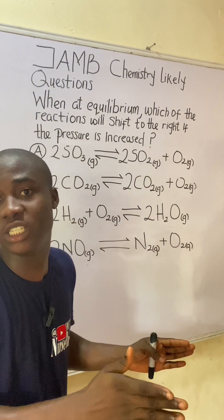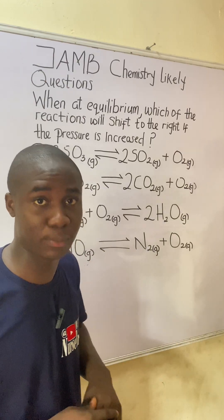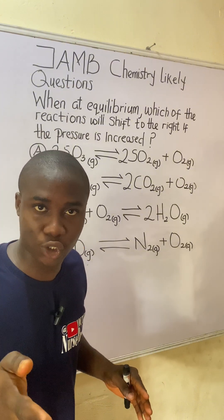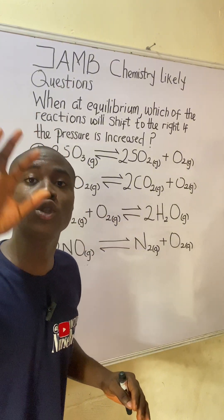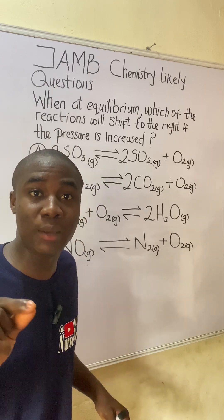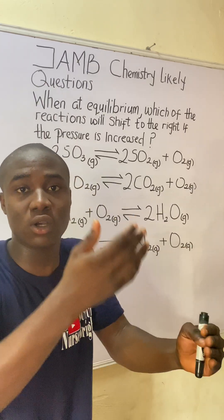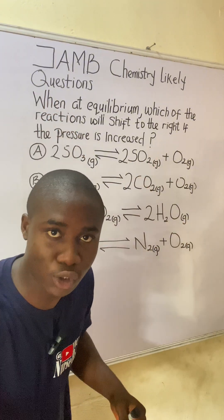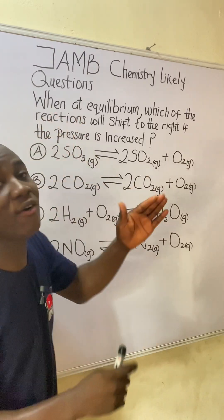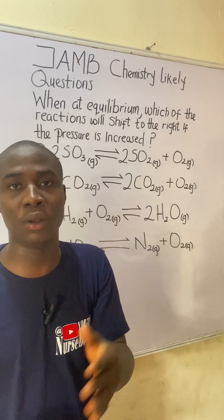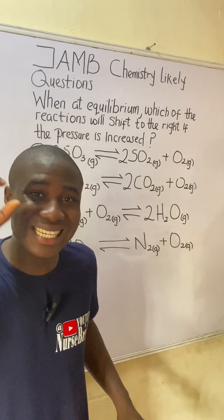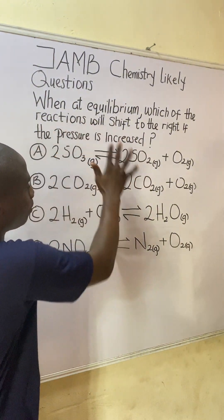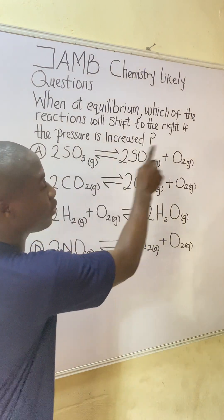So first of all we have to know what Le Chatelier's Principle states. Le Chatelier's Principle states that if an external constraint is imposed on a system at equilibrium, that system will adjust itself to annul the effect of these constraints. Please note: whenever we are discussing chemical equilibrium, the word 'system' can also be used in place of the word 'reaction,' and I believe you can see the options to this question — all of these are reactions.